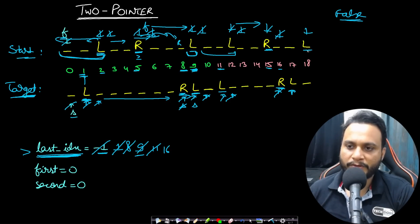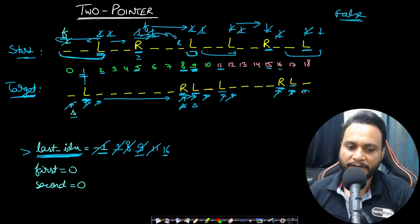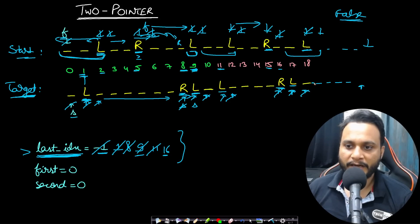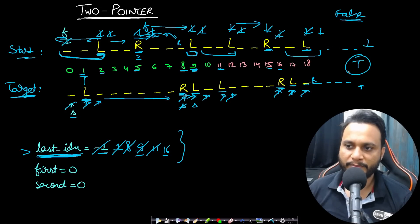We do first++ and second++, skip underscores. The next two characters are both L. The movable range is from index greater than 16, so 17 to 18. Target L is at index 17, falling in range — fine. We do first++ and second++. Now start has ended but target has not. Once the loop ends, we skip any remaining spaces in both strings to ensure we are not left with any unmatched character. If both strings end, we return true.